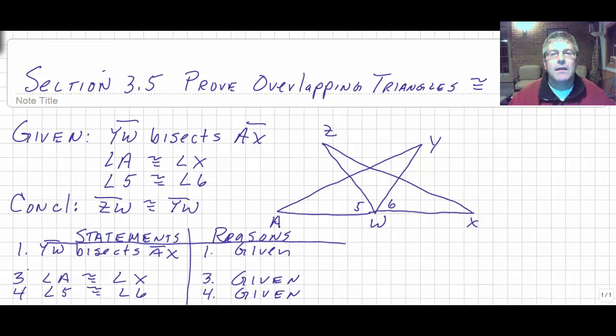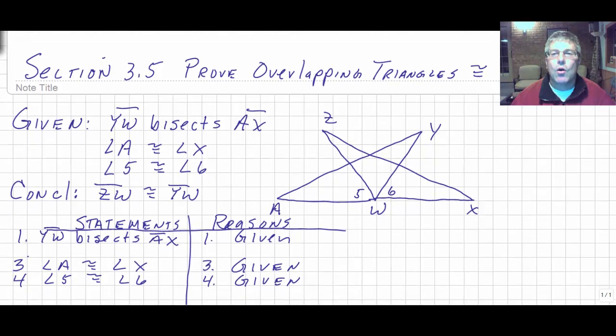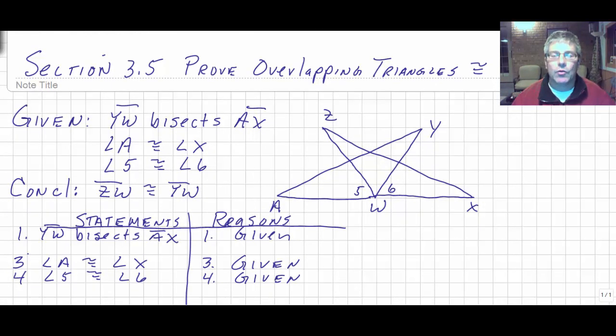So we did that along with introducing the other vocabulary and concepts of altitudes and medians. In this section, we're going to take it one step further. We're going to still prove triangles congruent, but now we're going to work with overlapping triangles. The increase in challenge here is in the diagram. That's the thing that we're changing. So let's take a look at overlapping triangles and proving them congruent.